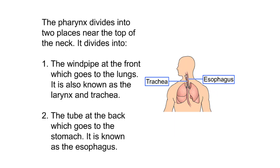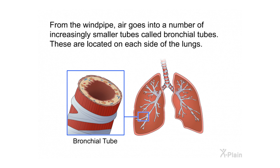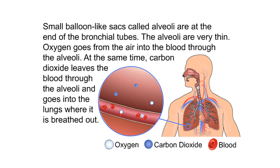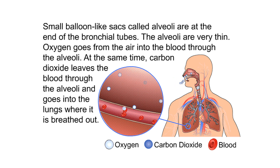The pharynx divides into two places near the top of the neck: the windpipe at the front, which goes to the lungs — also known as the larynx and trachea — and the tube at the back, which goes to the stomach, known as the esophagus. From the windpipe, air goes into increasingly smaller tubes called bronchial tubes. Small balloon-like sacs called alveoli are at the end of the bronchial tubes. Oxygen goes from the air into the blood through the alveoli, while carbon dioxide leaves the blood through the alveoli and is breathed out.